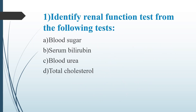First Question: Identify the Renal Function Test from the following. Option A: Blood Sugar. Option B: Serum Bilirubin. Option C: Blood Urea. Option D: Total Cholesterol. Answer is Option C, Blood Urea.